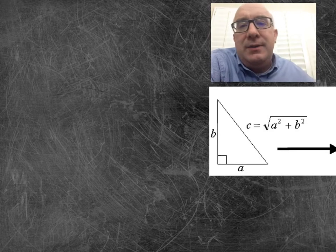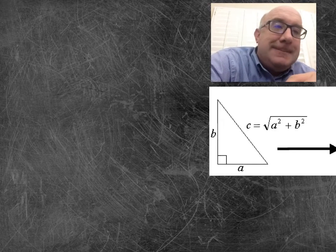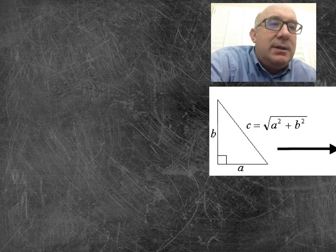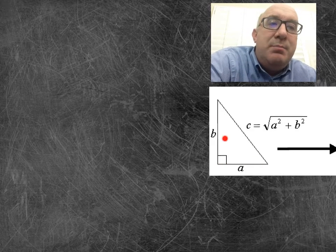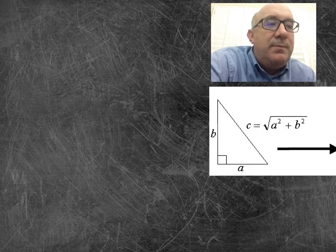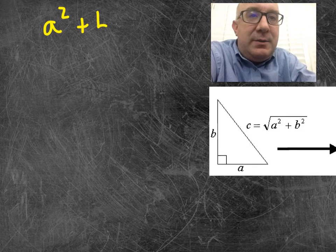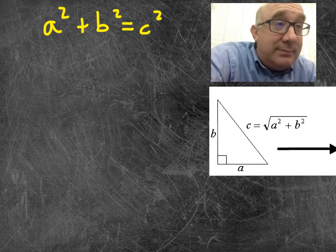But before I get there, I want to just first identify that really the distance formula is the Pythagorean theorem. So if you look at this little guy here, I think most of you feel pretty comfortable that a squared plus b squared equals c squared. And so, you know, this little formula I don't see to be tricky or a problem for most of you.